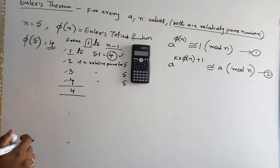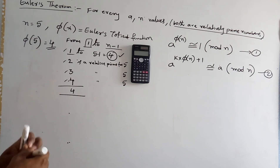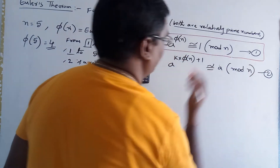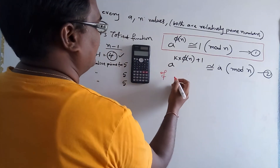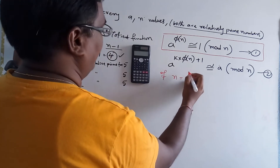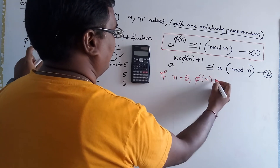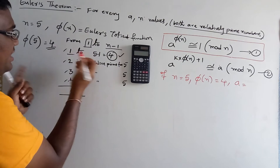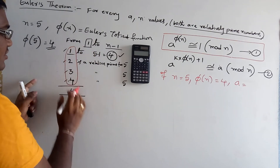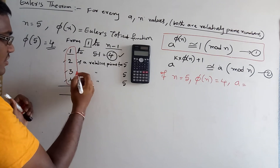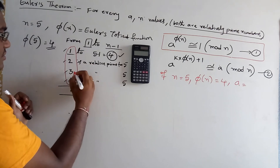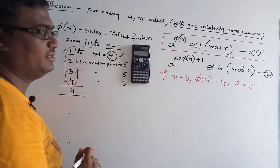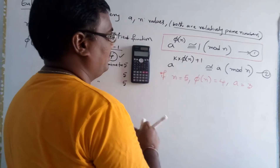There are 4 relative prime numbers for n = 5, so φ(5) = 4. Now I will solve one example based on Case 1. Suppose n = 5, φ(n) = 4, and a is any number selected from these four relative prime numbers.